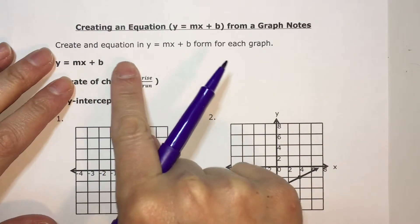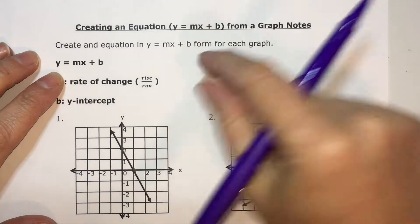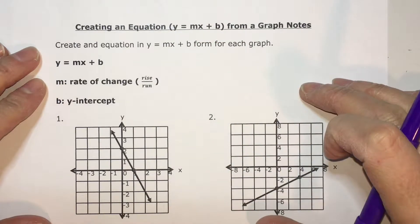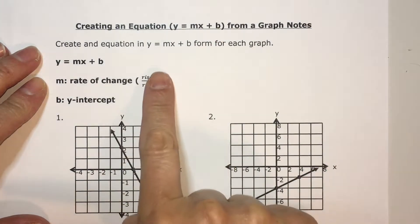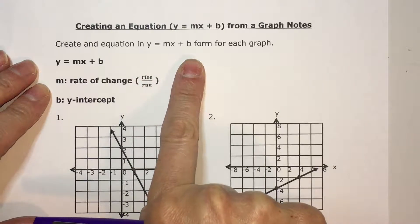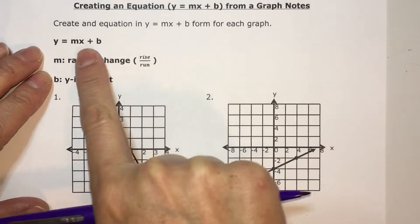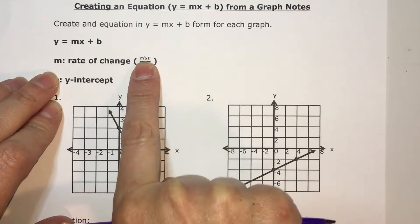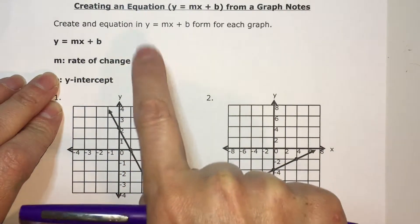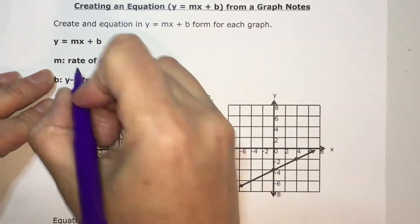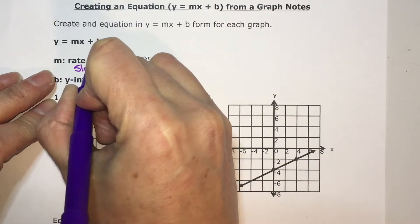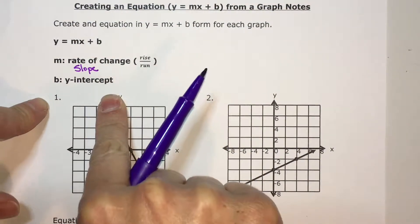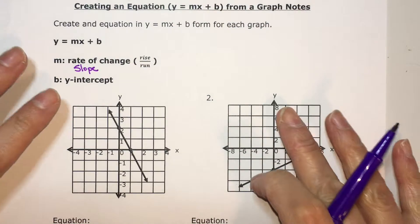Hey, I'm going to show you how to create an equation in slope-intercept form, which is y equals mx plus b, from a graph. You're going to create your equation in y equals mx plus b form for each graph. Remember that m is always your rate of change, which you use rise over run for a graph. Another word for this is slope. b is your y-intercept, which is the point where your graph goes through the y-axis.